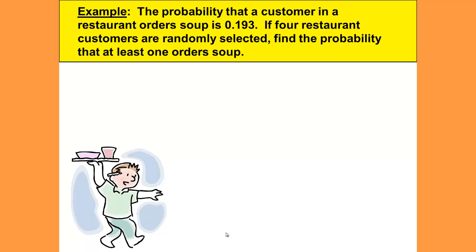First we will work an example. The probability that a customer in a restaurant orders soup is 0.193. If four restaurant customers are randomly selected, find the probability that at least one orders soup.